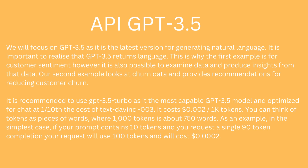OpenAI recommends using GPT-3.5 Turbo — it's the most capable model and is optimized for chat at about a tenth of the cost of some other versions. It costs 0.2 of a cent for a thousand tokens, and you can think of tokens as the space that words take up — a thousand tokens is roughly 750 words. So if your prompt contains 10 tokens and you request a completion of 90, that's 100 tokens total, which would be about 0.02 of a cent.